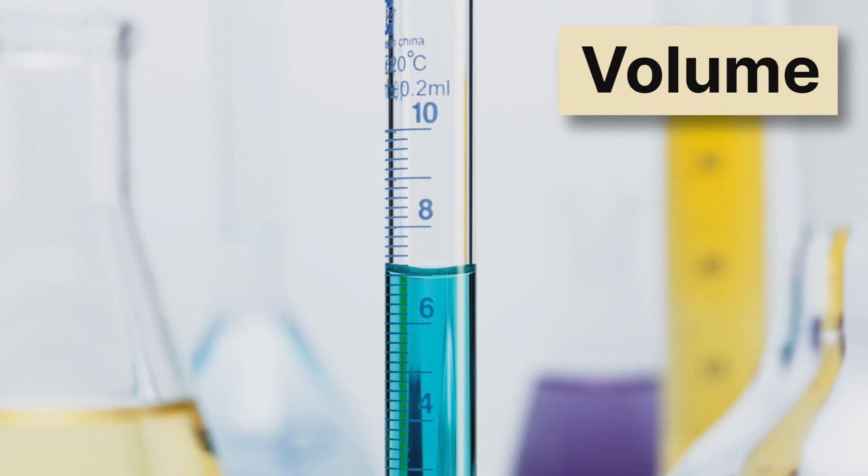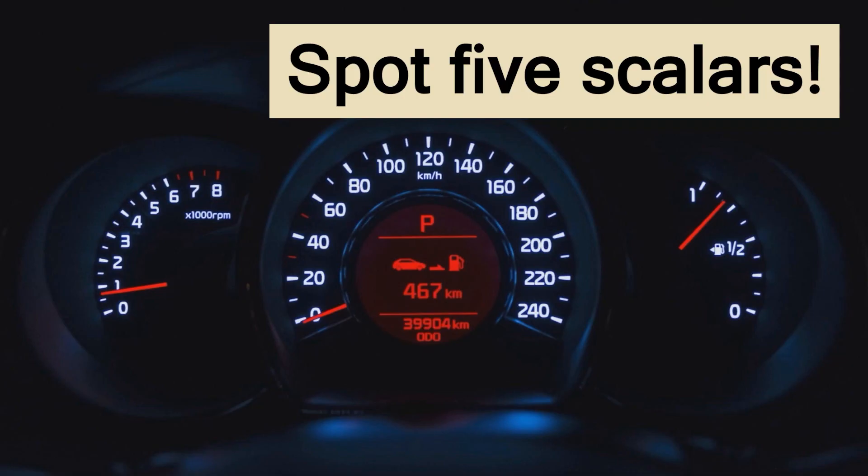When we read out the quantity of liquid on this graduated cylinder, we'll see that it's just about 7 milliliters. Again, we have a quantity, a magnitude, that's the 7, and a unit, milliliters. Okay, let's practice spotting some scalars. Pause the video and try to spot 5 scalars.